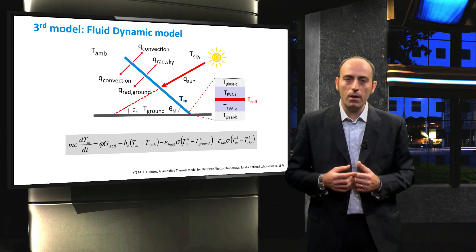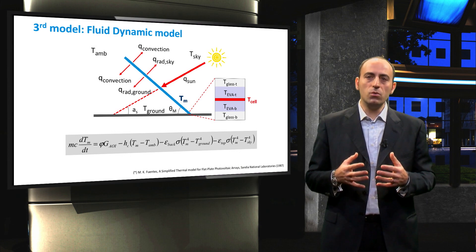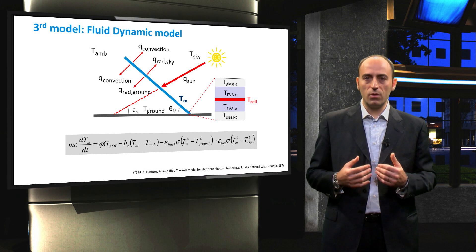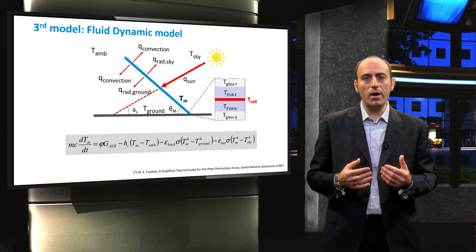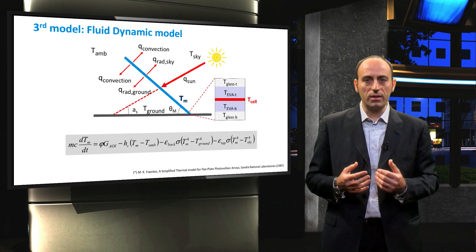We want to point out that we assumed the entire module to be a single mass with a uniform temperature. However, this assumption is not entirely realistic because PV modules are made of various layers of different materials. Our purpose is to evaluate the temperature of the solar cell itself, which is where the solar radiation is effectively absorbed.